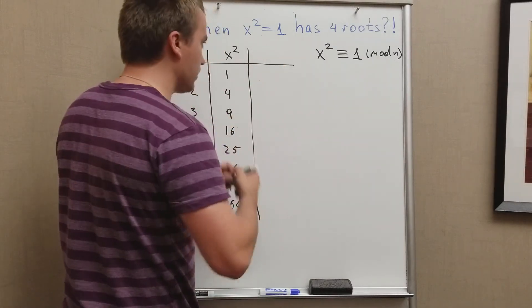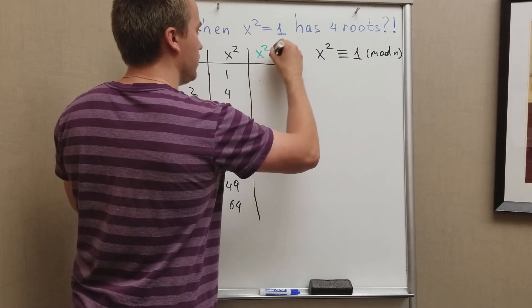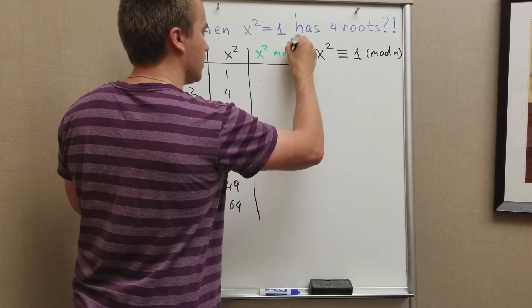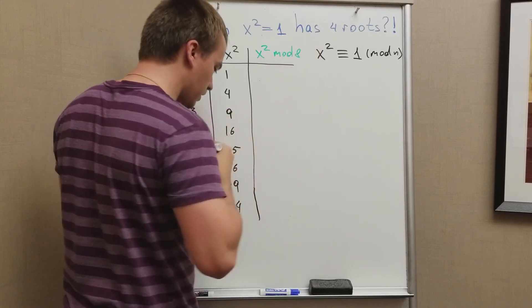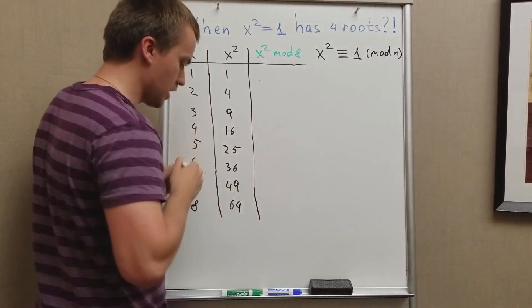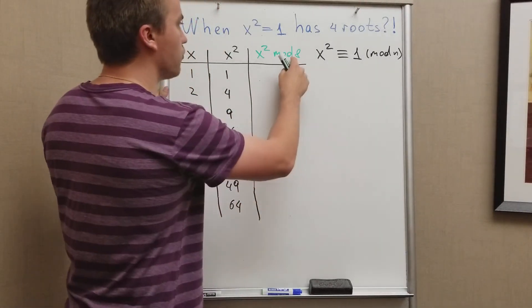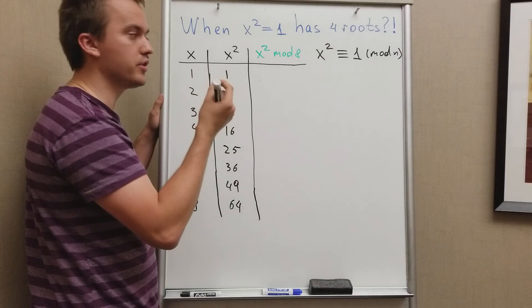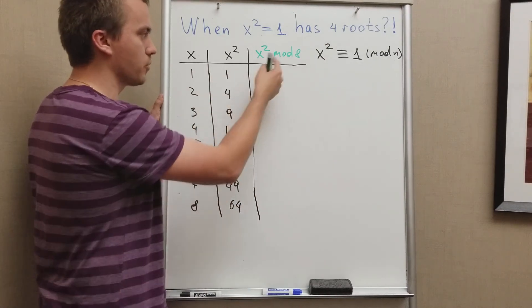And let's figure out which n I need to choose. By trial and error you can consider x squared mod 8. So what does x squared mod 8 mean?